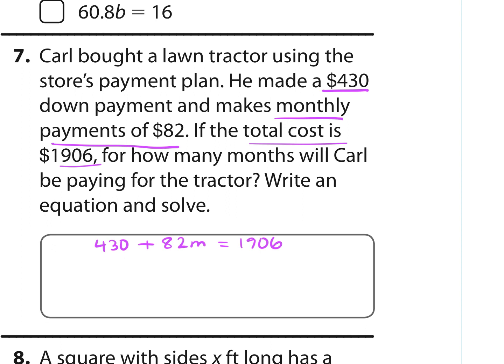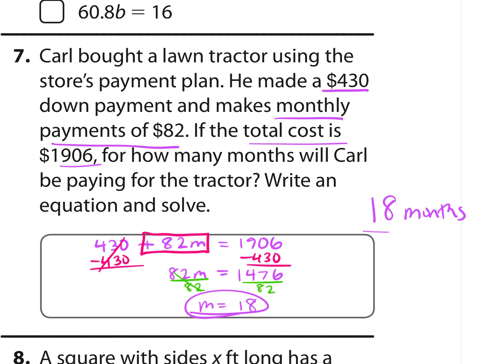So we've set up an equation, and we're going to solve it to find M, the number of months he's paying for this tractor. So I'm just going to go through and solve. I'm going to box in the M term, subtract $430 from both sides. We get 82M is equal to $1,476. And then divide both sides by 82 to get M by itself. And we get that M is equal to 18. So it'll be 18 months. We've solved the problem.